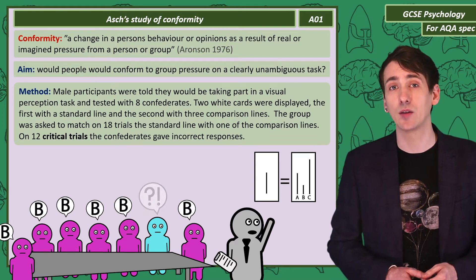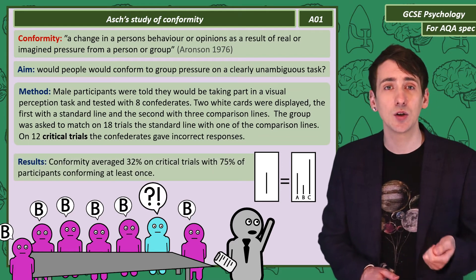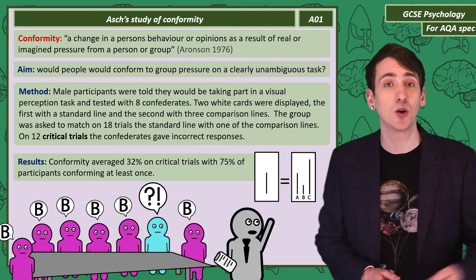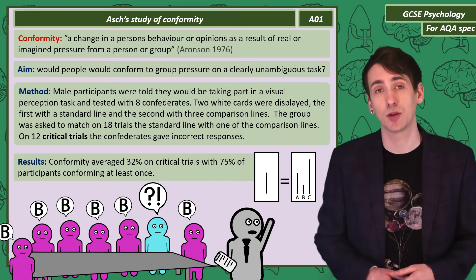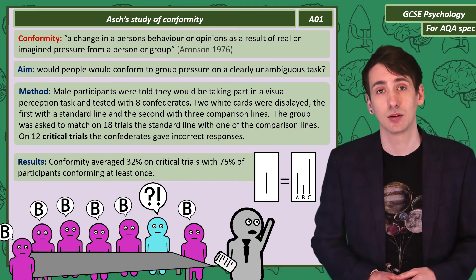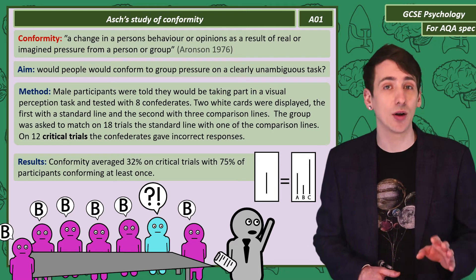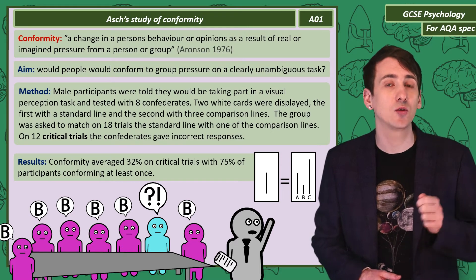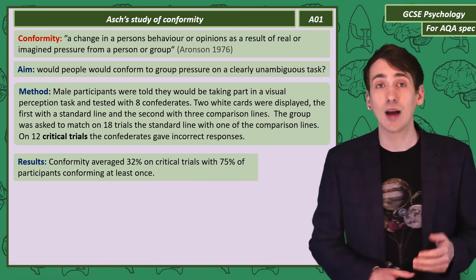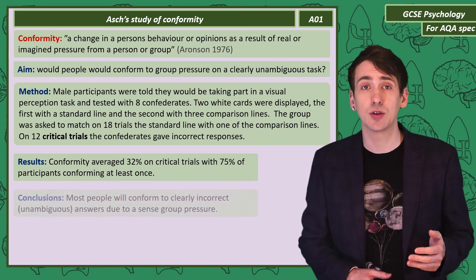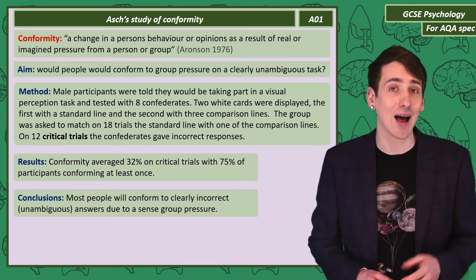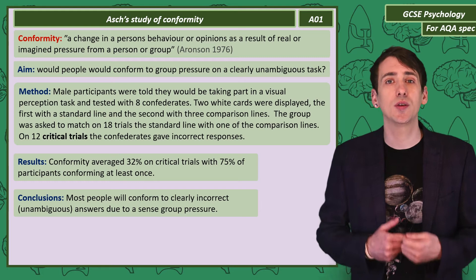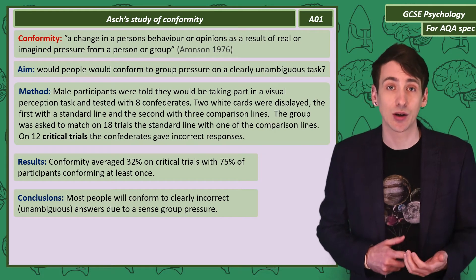Asch found that on the critical trials, 32% of the time people would conform and give clearly the wrong response. 75% of all participants conformed on at least one critical trial. Asch concluded that people will conform and give clearly incorrect answers due to a sense of group pressure.